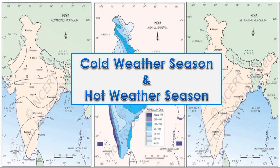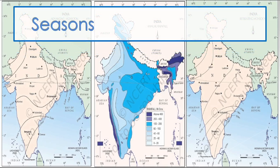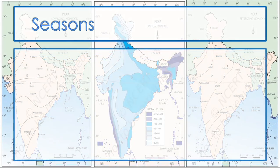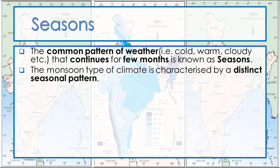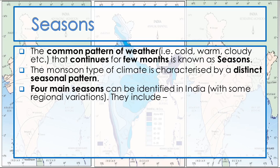Before going to the topic, we have to know about the season. The common pattern of weather — cold, warm, cloudy, etc. — that continues for a few months is known as seasons. The monsoon type of climate is characterized by a distinct seasonal pattern. Four main seasons can be identified in India with some regional variations.